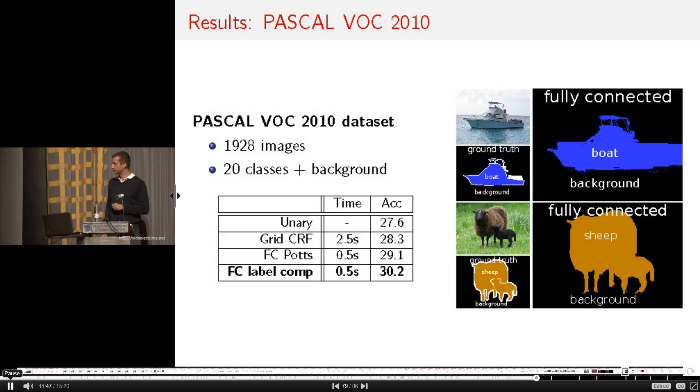The second dataset we evaluated our algorithm on is the VOC 2010 dataset, which contains almost 2,000 images, 20 classes plus a separate background class. In here, again, the fully connected model improves roughly by a factor of three over the simple grid structured model.